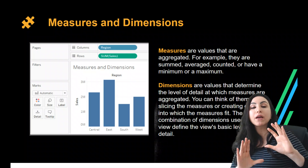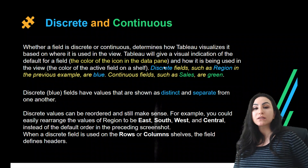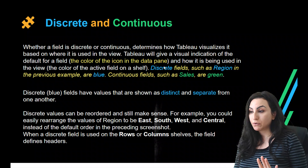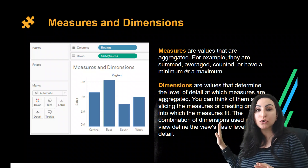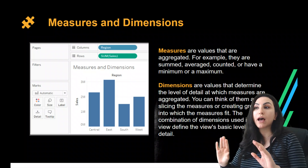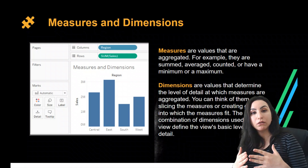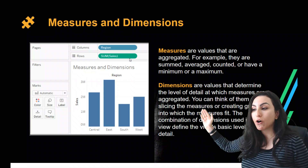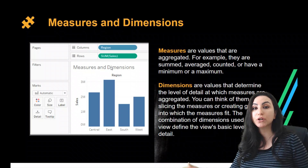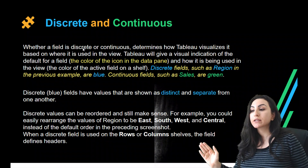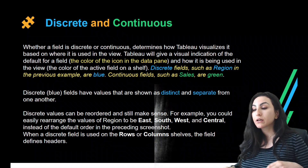Now, what's the difference between discrete and continuous? Before I get there, I'd also like to mention that in the Tableau interface, dimensions are highlighted in blue capsules while measures are in green capsules. You can see region is in a blue capsule while sales is in a green capsule. I'll talk about different aggregation types like sum and average in future videos.